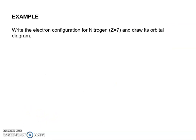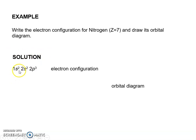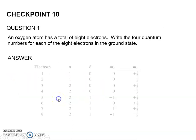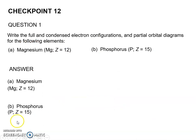Example: write the electron configuration for nitrogen and draw its orbital diagram. The nitrogen configuration is 1s2, 2s2, and 2p3. In the orbital diagram, draw the 1s orbital with 2 electrons with opposite spin, the 2s orbital with 2 electrons in opposite spin, and the 2p orbital with 3 orbitals each having 1 electron with parallel spin — this follows Hund's rule.